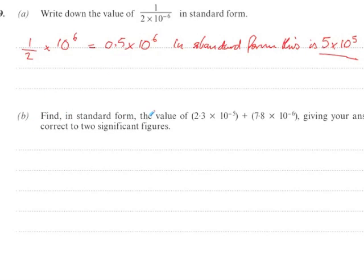Now find, in standard form, the value of 2.3 times 10 to the minus 5 plus 7.8 times 10 to the minus 6, giving your answer correct to two significant figures.